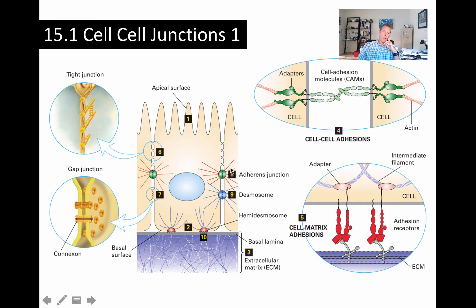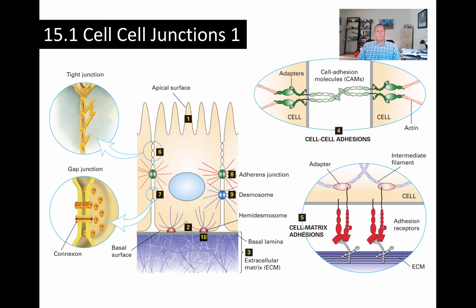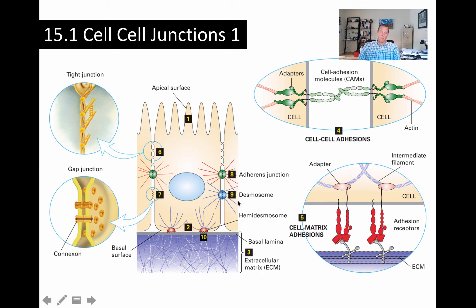Number eight is adherens junctions. These basically promote cell-to-cell adhesion and are continuous zones — think of them as a band of continuous attachment around the cell, so at every point around the cell you find the adherens junction. They connect cells to one another via the actin cytoskeleton, shown here with these red radiating filaments. Number nine is the desmosome, also involved in cell-to-cell adhesion, but they're much more focused, localized regions of attachment. They attach cells together via intermediate filaments, connecting the cytoskeletons of two cells together using this desmosome structure.